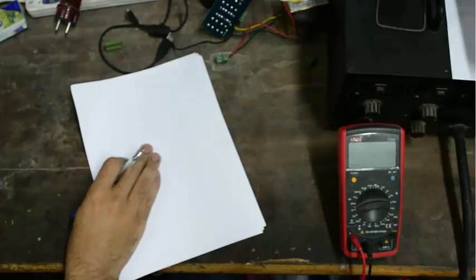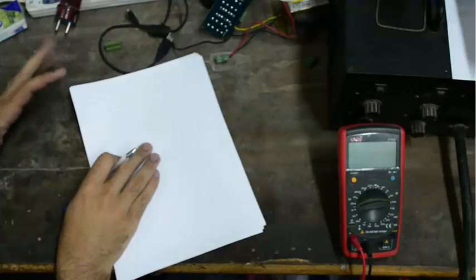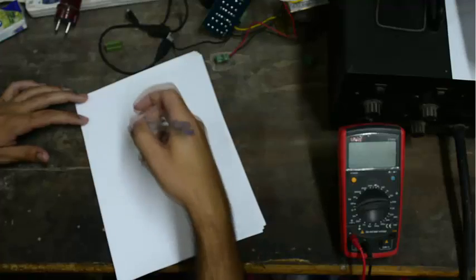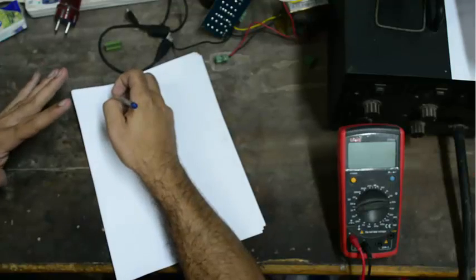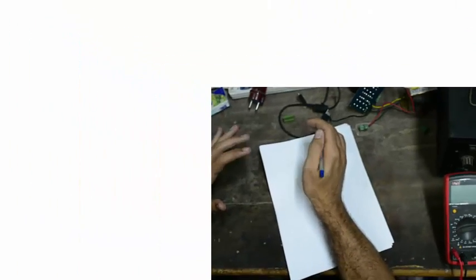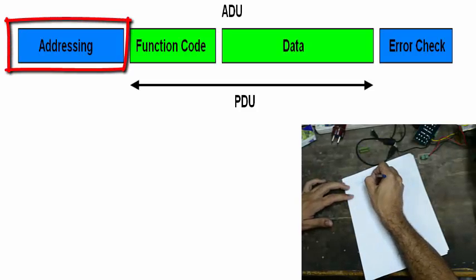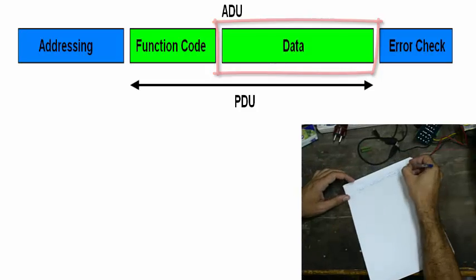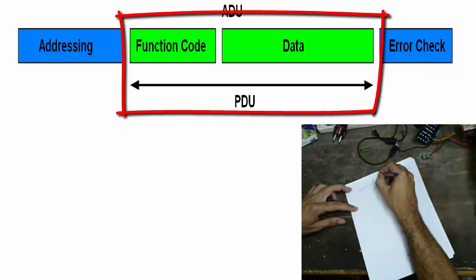Modbus is described on the OSI model as a hardware-layer protocol. The Modbus frame contains several fields: the first field is the address field, then you have the function code, then the data, and finally the CRC. The function code and the data together are called the Modbus PDU.